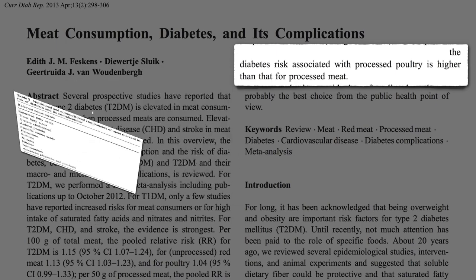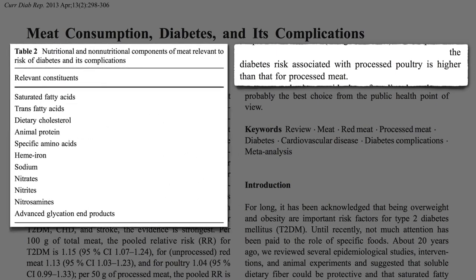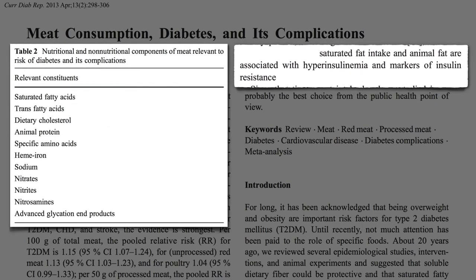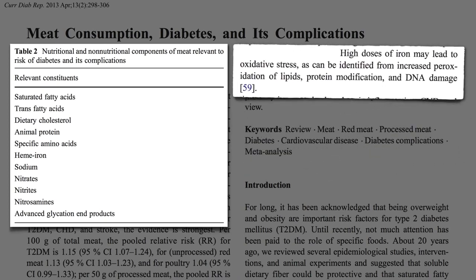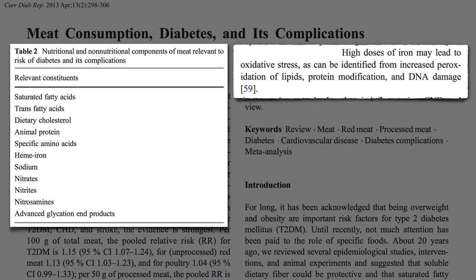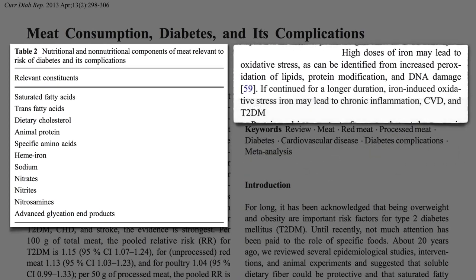There's a whole list of potential culprits in meat. Maybe it's the saturated fat and animal fat, or the trans fats that are naturally found in meat, or the cholesterol or the animal protein. The heme iron in meat can lead to free radicals, and this iron-induced oxidative stress may lead to chronic inflammation and type 2 diabetes.